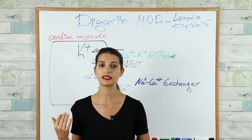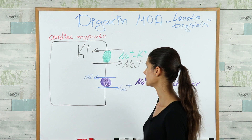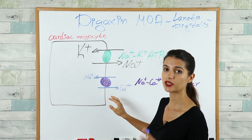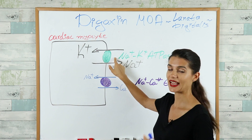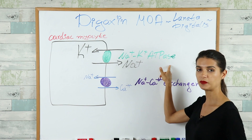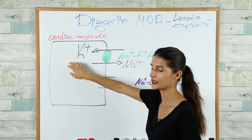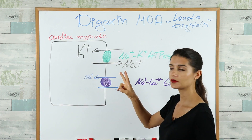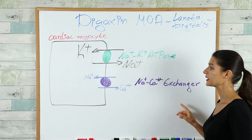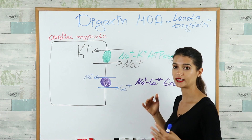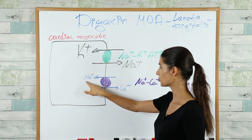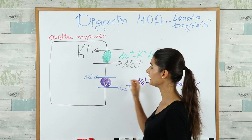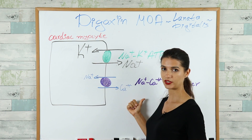Let's see how digoxin actually works. Here what I have drawn is the cardiac myocyte, and on the sarcolemma of the cardiac myocyte we have two pumps. The first one is energy dependent — it's called sodium-potassium ATPase, and its main function is to put potassium ions inside the cell and bring out sodium ions. The second pump is called the sodium-calcium exchanger; it doesn't require energy and can move sodium and calcium ions in both directions.